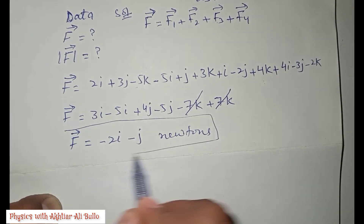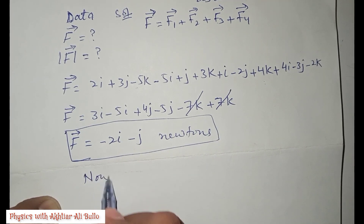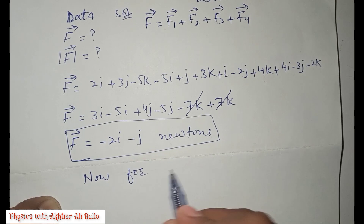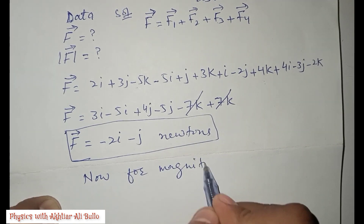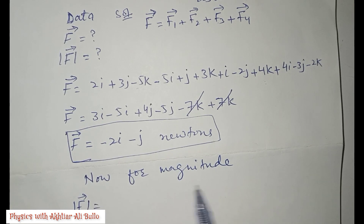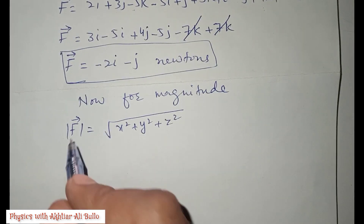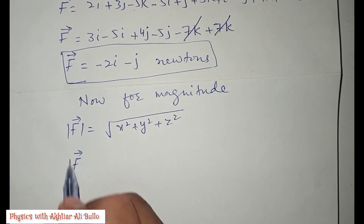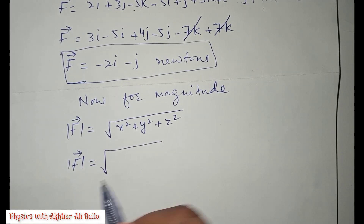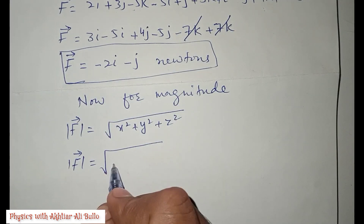This is our required answer. Now for the magnitude we will use the formula: F = √(x² + y² + z²). Putting the values: the value of x is −2, so x² is (−2)².